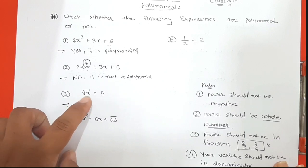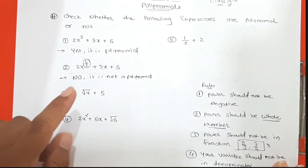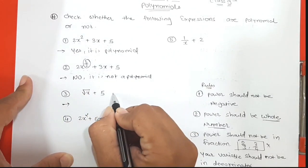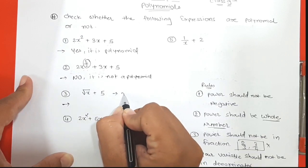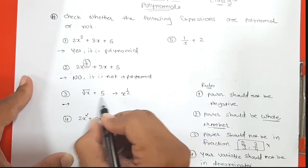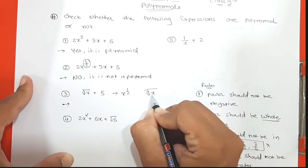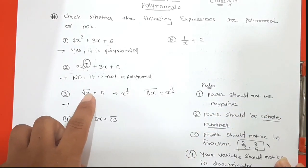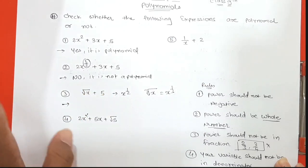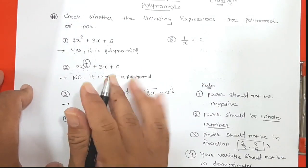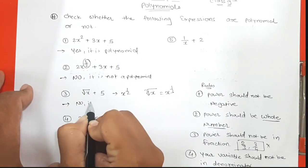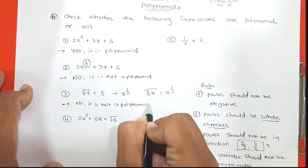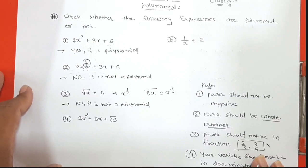The third expression is root x plus 5. Root x can be written as x raised to 1/2, which is a fraction power. So the variable has a fractional power — it is not a polynomial.